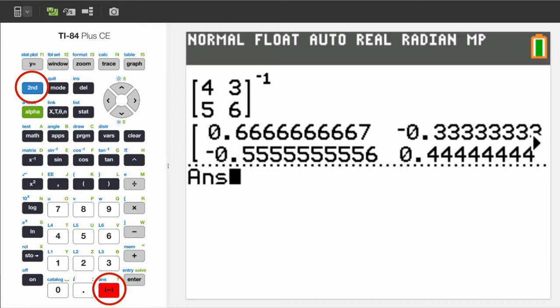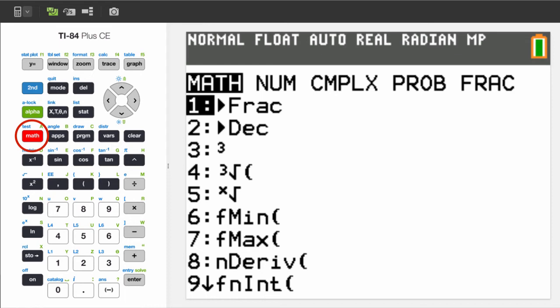Second key, negative key, to use the previous result, and then press the math key and select the convert to fraction function. It's the first one on the top.